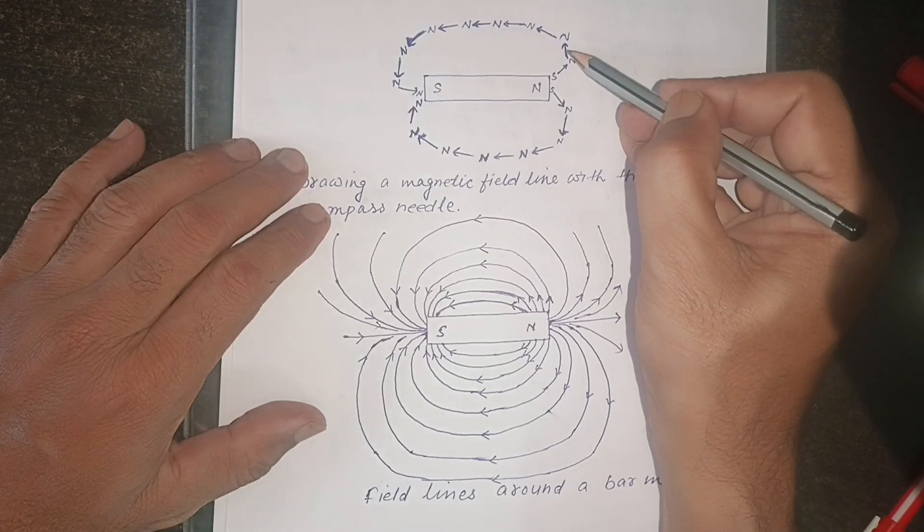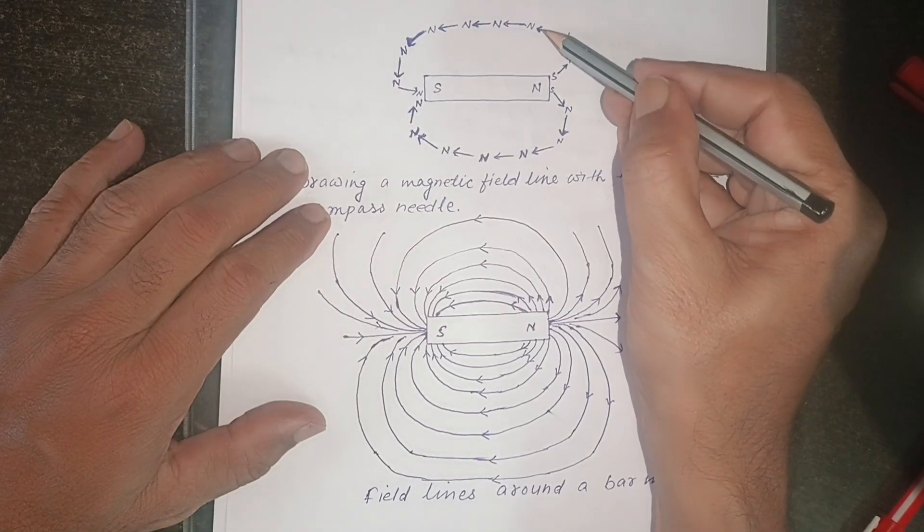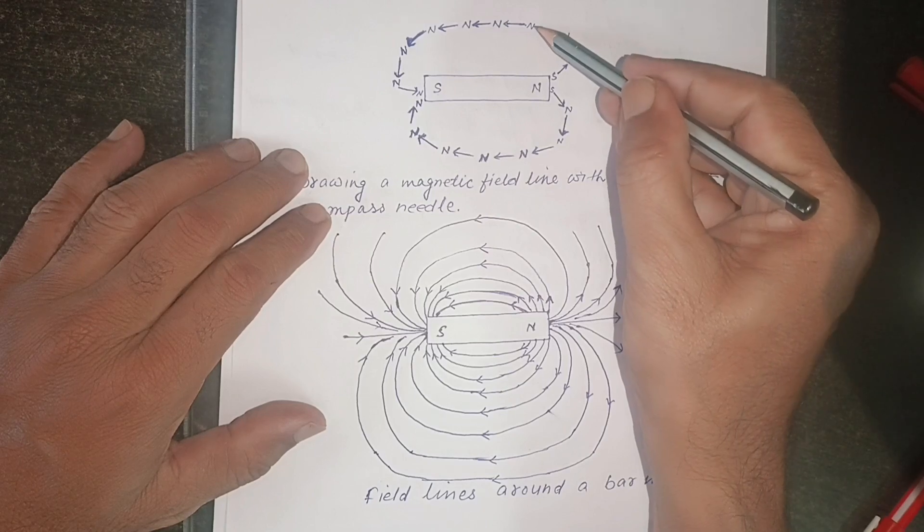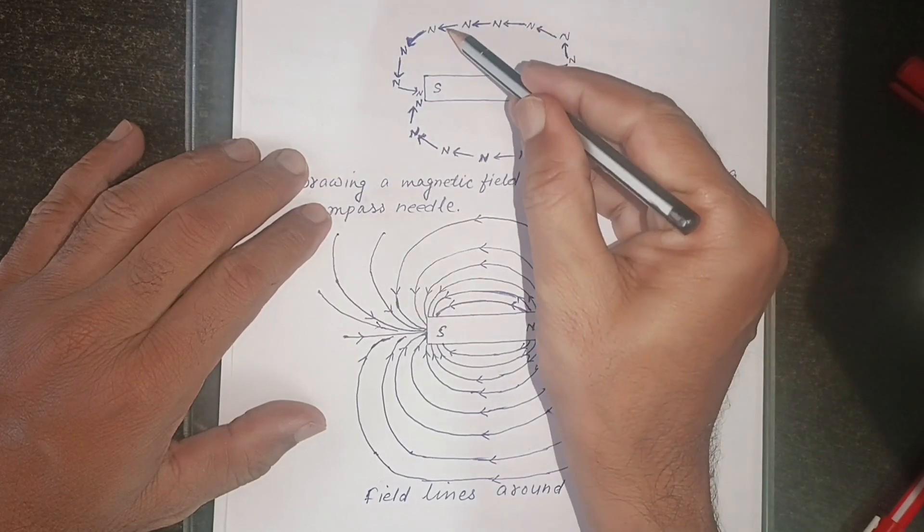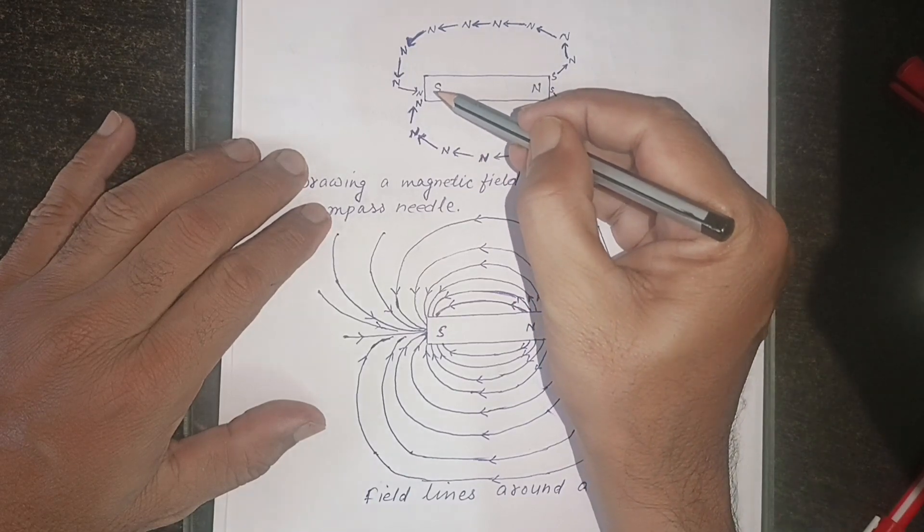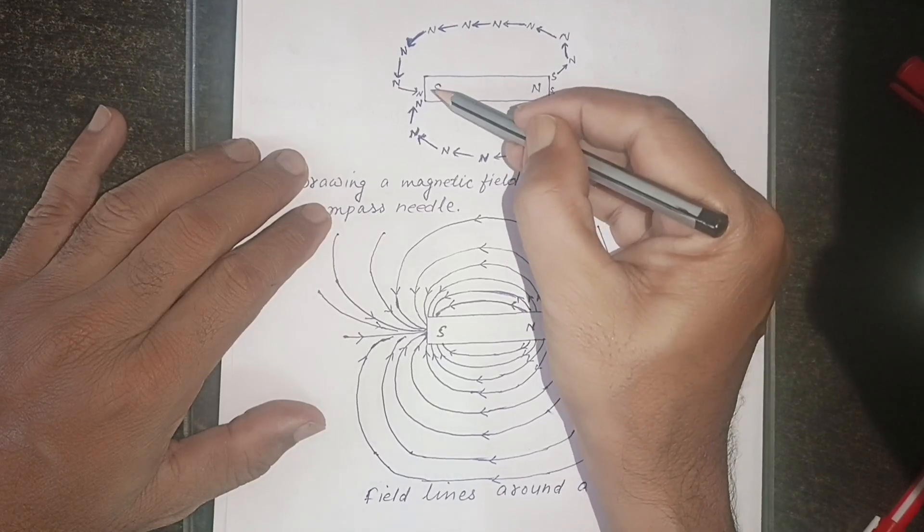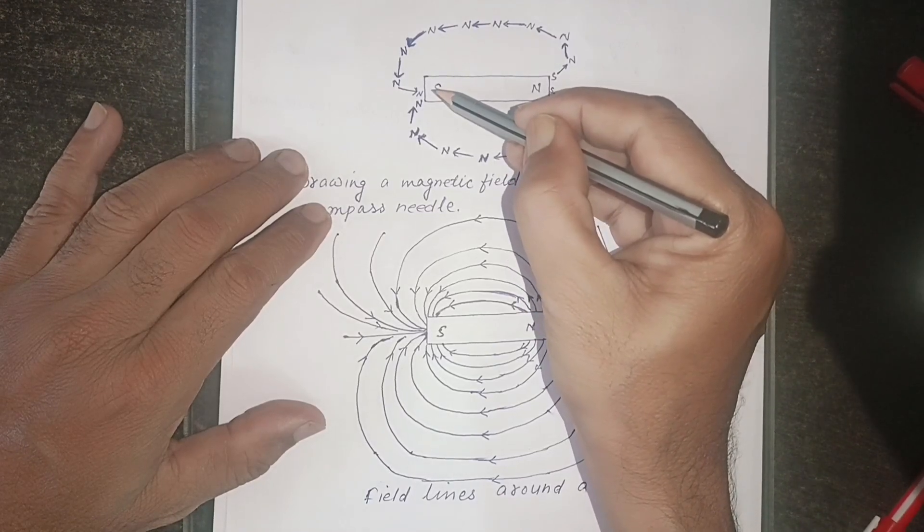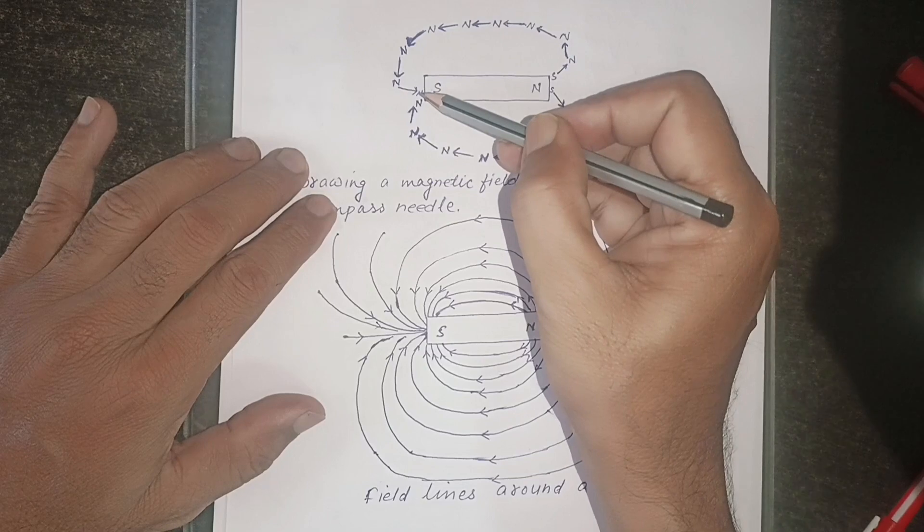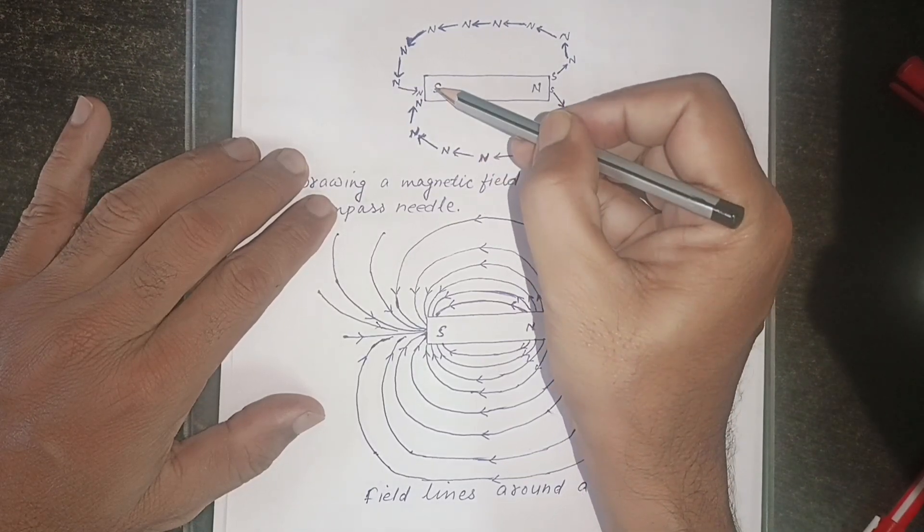In this way, go on changing the position of the compass and gradually we will reach to the south pole of the magnet, where the north pole of the compass will be towards south, and south pole of the compass will be away from south pole of the magnet.